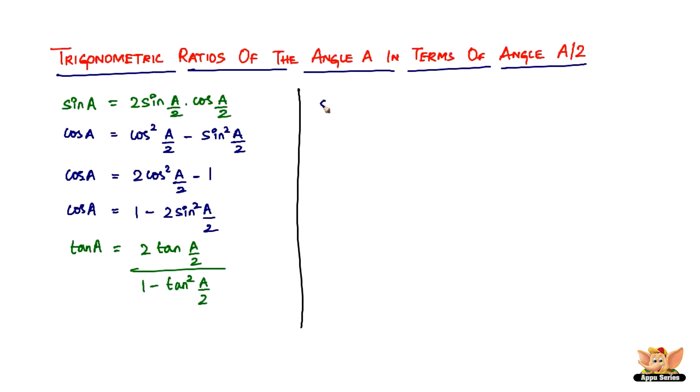Now let's go to sine A. If you want to write it in terms of tan, sine A can be written like this: 2 tan A by 2 divided by 1 plus tan square A by 2. So finally, we've got cos A. Cos A is 1 minus tan square A by 2 divided by 1 plus tan square A by 2.